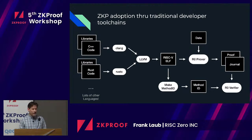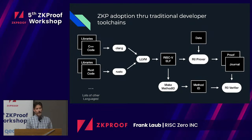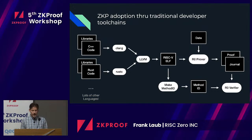Our thought about how to get ZKP adoption was to allow developers to use tools they're familiar with — so C++, Rust, anything that can compile into RISC-V. RISC-V is kind of like an instruction set similar to MIPS ARM; it's a reduced instruction set. You can use C++ or Rust, compile it down into LLVM. We then have a prover which will run the code inside a virtual machine — you can provide whatever data you want — and a verifier that checks that the thing is running correctly.